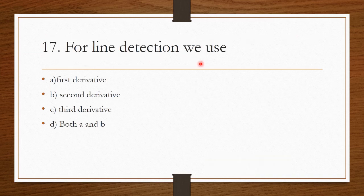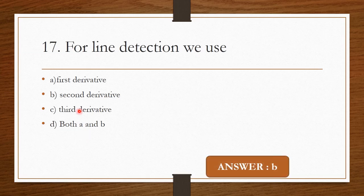Question 16: For line detection, we use — Option A: First derivative. Option B: Second derivative. Option C: Third derivative. Option D: Both A and B. For line detection, we use the second derivative.